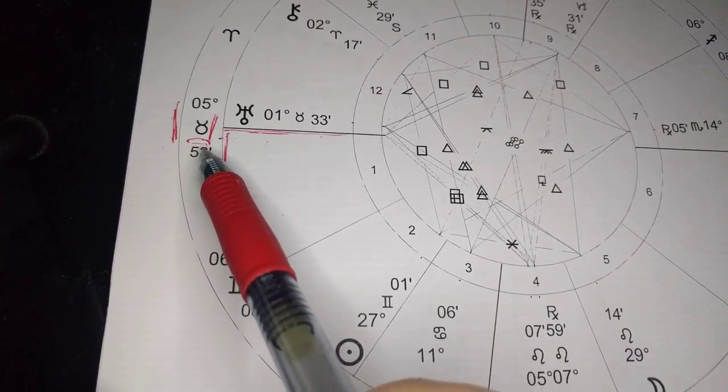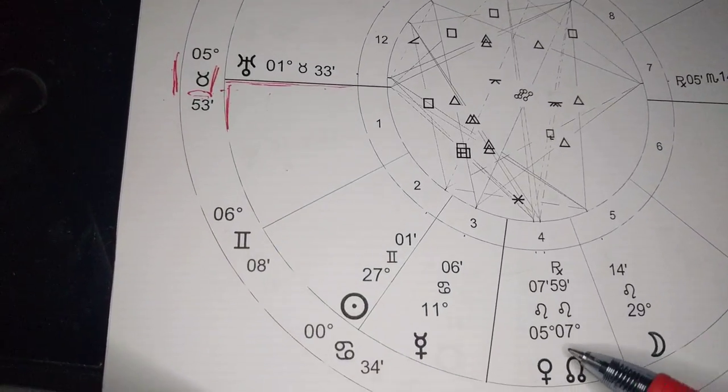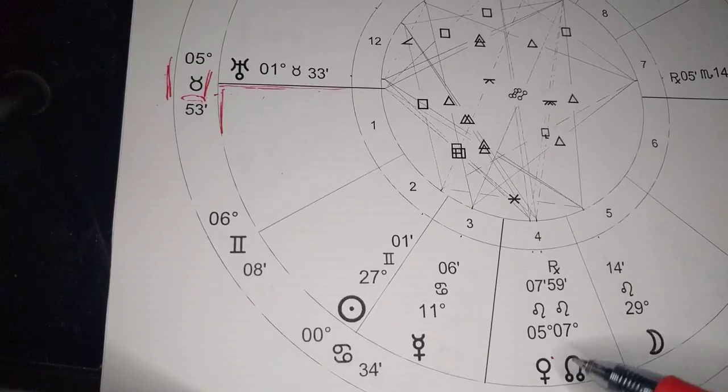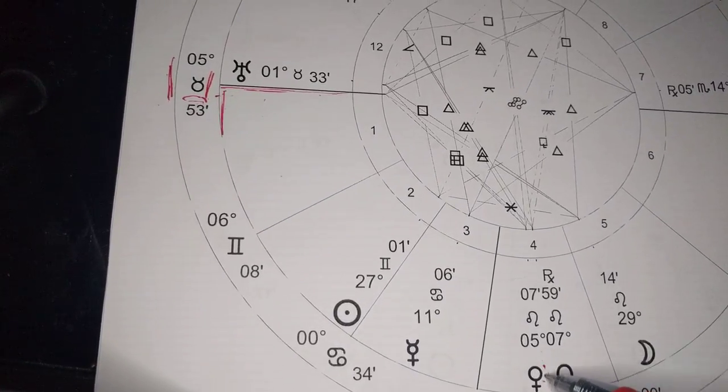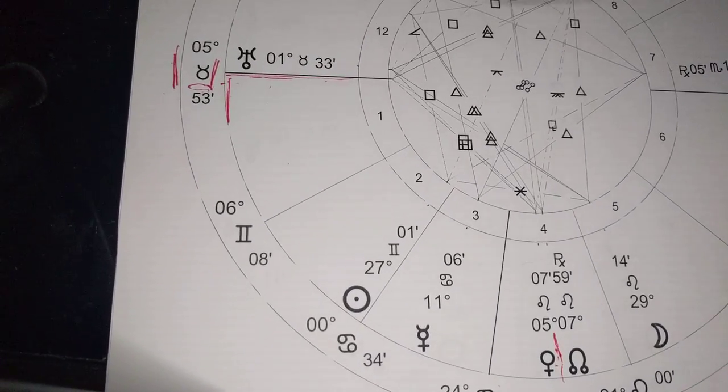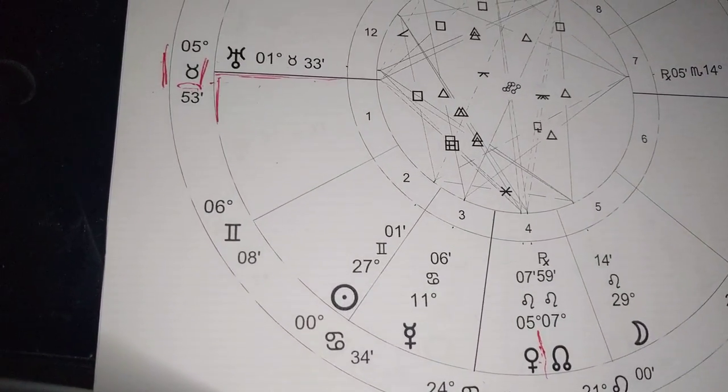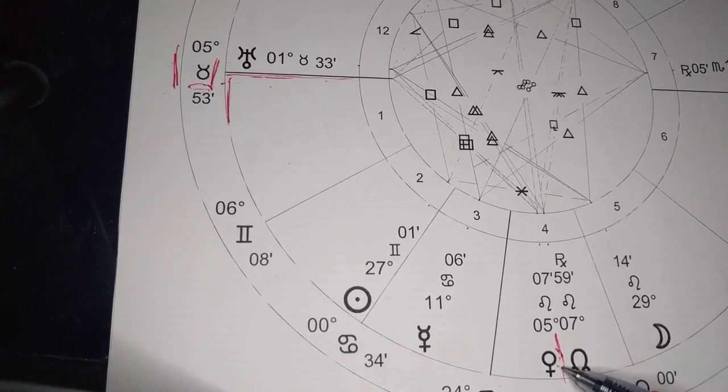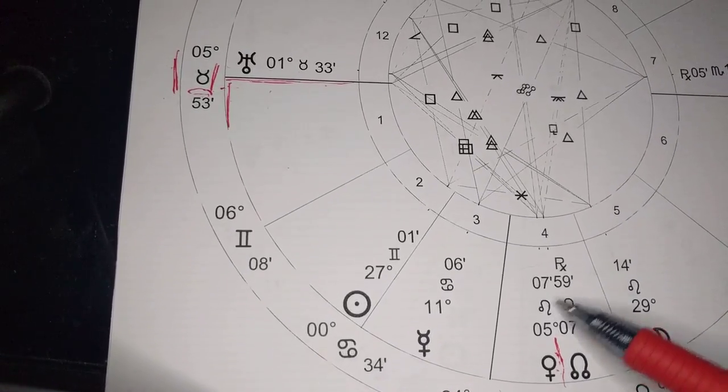To understand more about how your Taurus rising sign reveals itself, you want to look at another layer in your chart, which is your chart ruler of Venus. You look at where Venus is in your natal chart for more information about how your Taurus rising sign comes through.